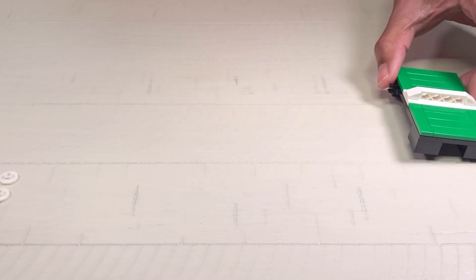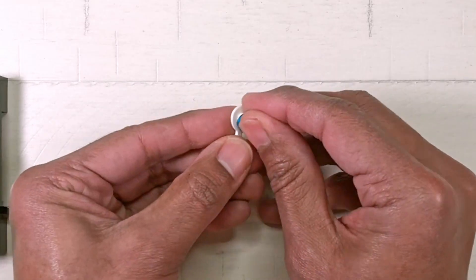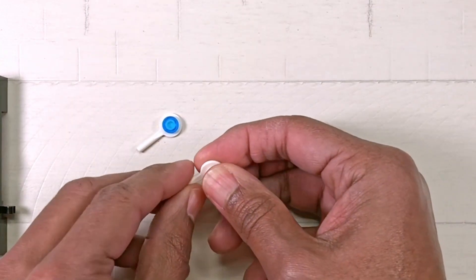Set the table aside and grab a signal paddle and attach a 1 by 1 round tile. And repeat that step for the second paddle.